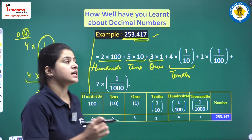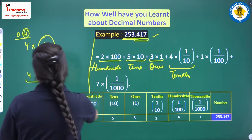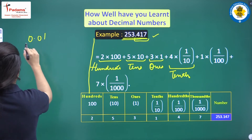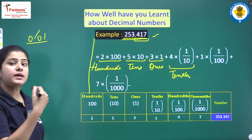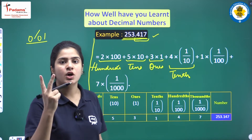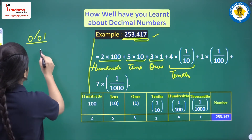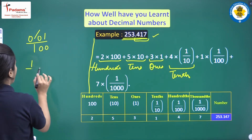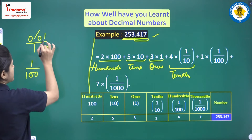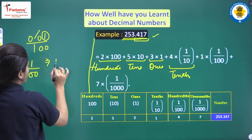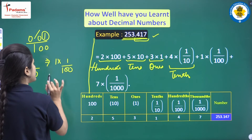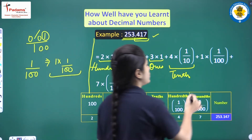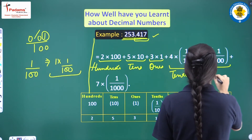Talking about the next: 0.01. When you remove the decimal, how many digits are there after the decimal? Two digits. So in the denominator there will be 2 zeros over 1, making it 1 upon 100. And there is 1, so we can write 1 into 1 upon 100. This is your hundredths place.